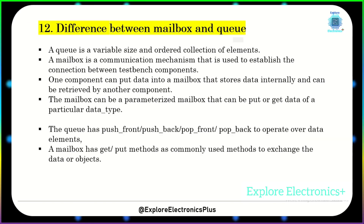What are the differences between mailbox and queue? A queue is a variable-size, ordered collection of elements, whereas a mailbox is a communication mechanism used to establish a connection between testbench components. One component can put data into the mailbox, which stores it internally, and another component can retrieve it. A mailbox can be parameterized to handle a particular data type. The queue has push_front, push_back, pop_front, and pop_back operations. Mailbox commonly uses get and put methods to exchange data or objects.